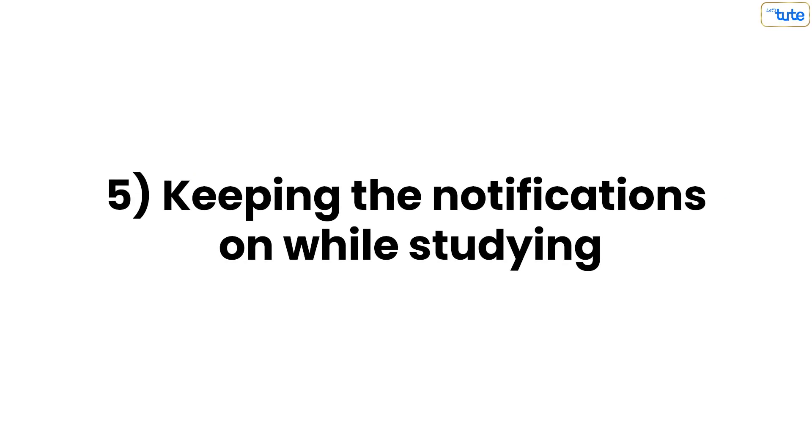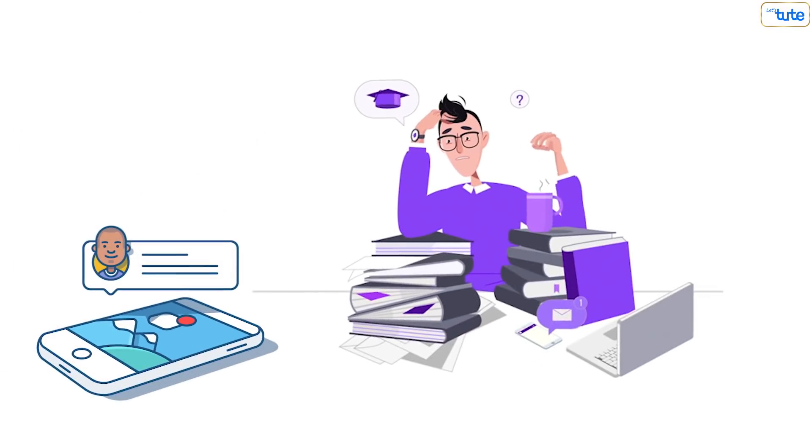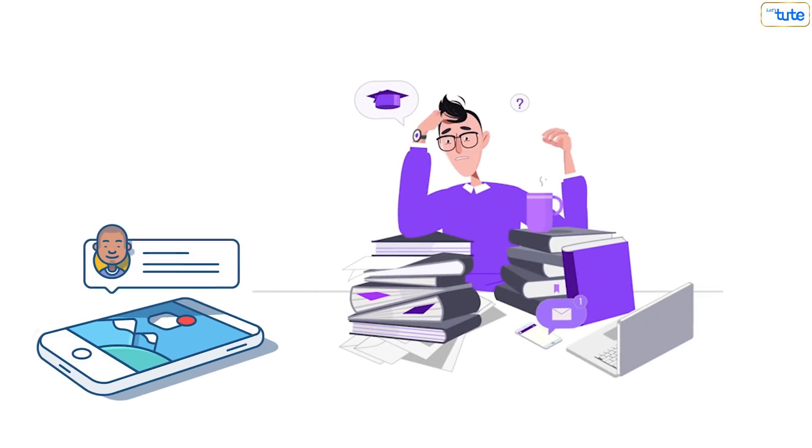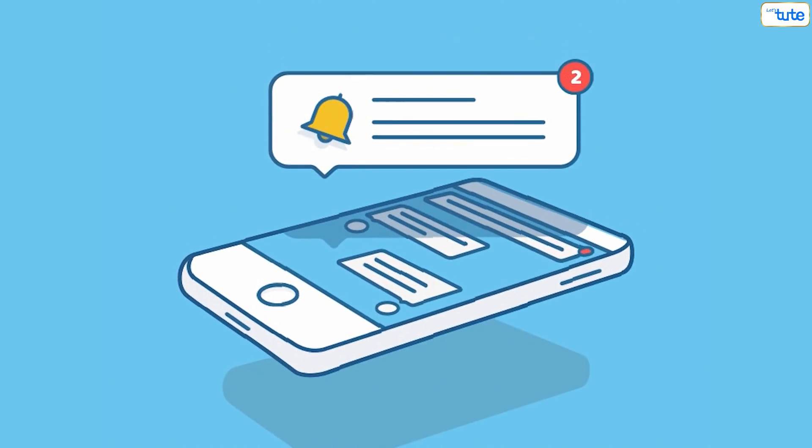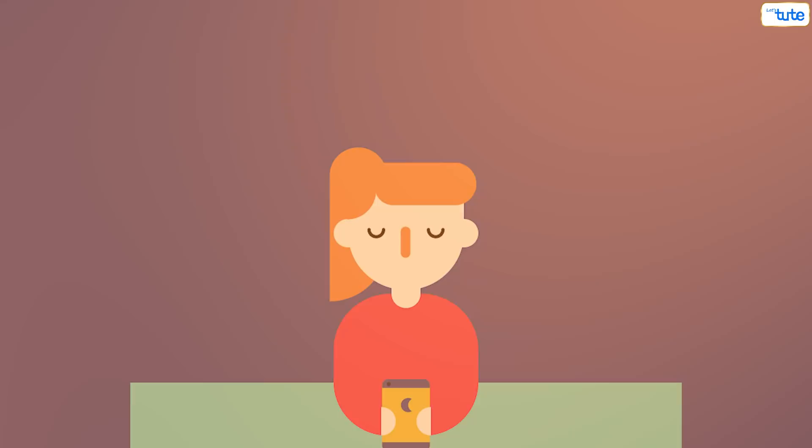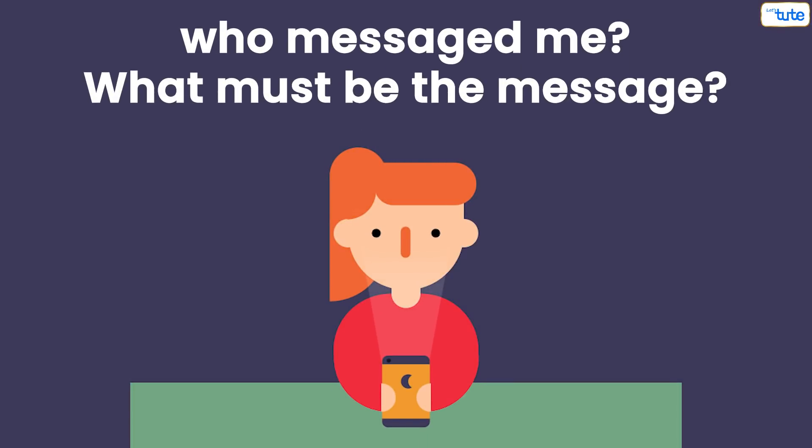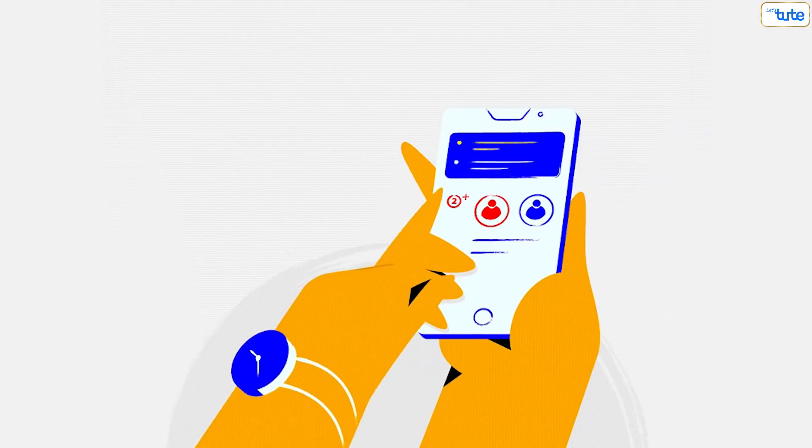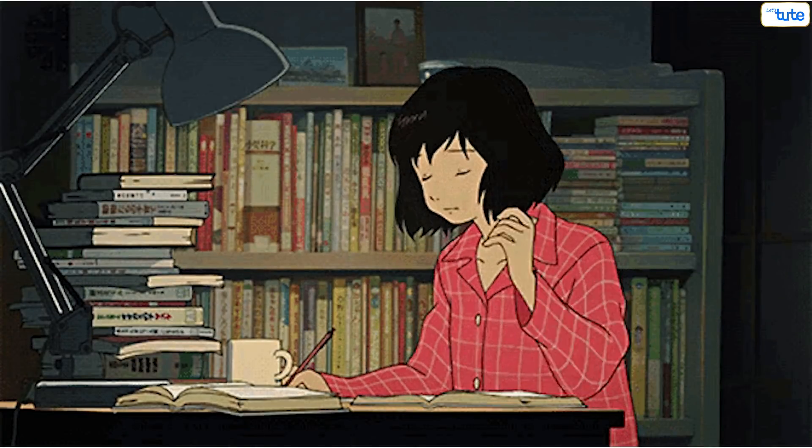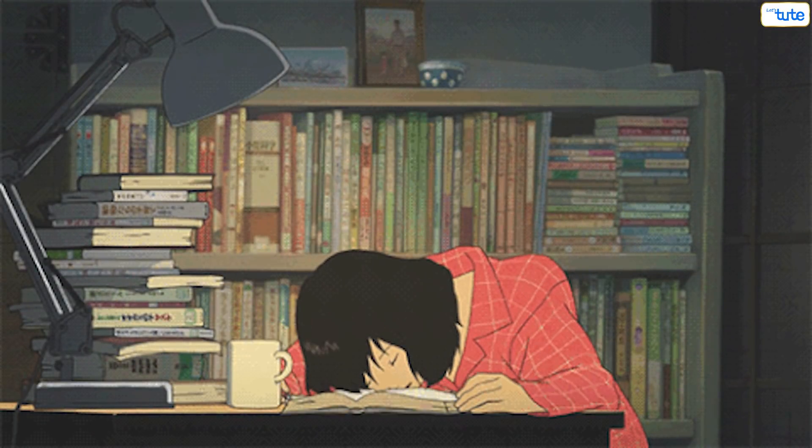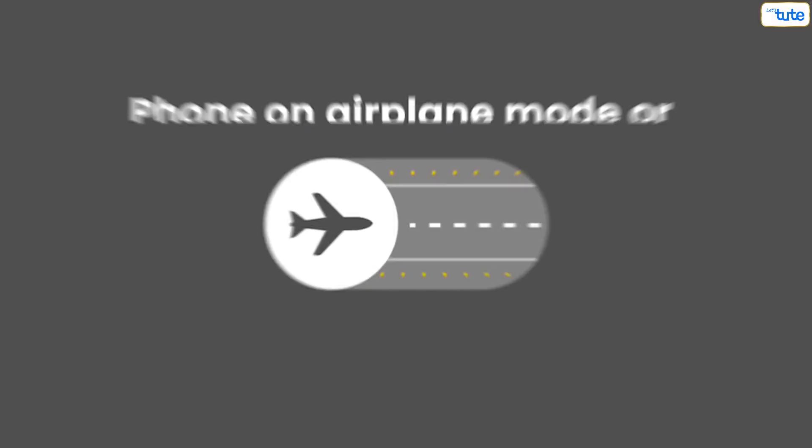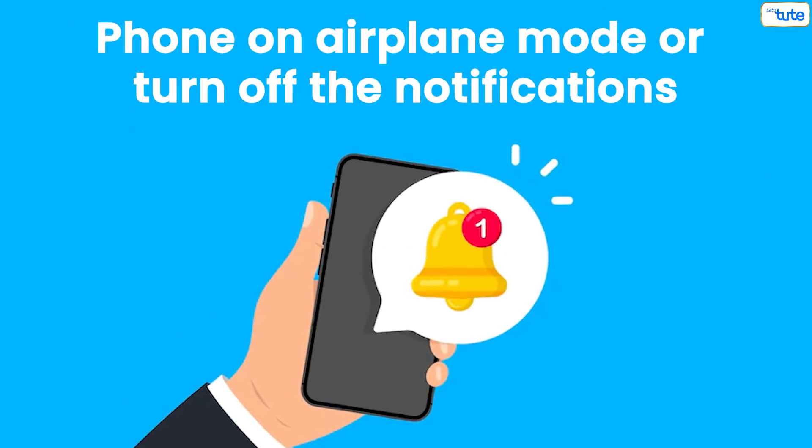Keeping the Notifications On While Studying. If you keep your notifications on while studying, then you will never be able to focus completely on your studies. The sound of the notification will always keep you distracted since you will always think, 'Oh, who messaged me? What must be the message?' And probably you will check your phone just after getting a notification. This will break your flow and thus you won't be able to focus on your studies completely. So, the best solution to this is to keep your phone in a different room and if this is not possible, at least keep your phone on airplane mode or turn off the notifications.